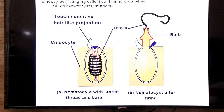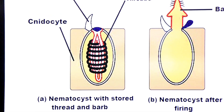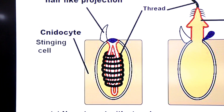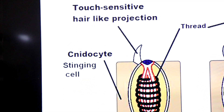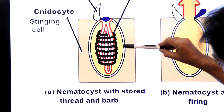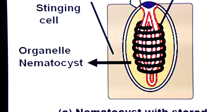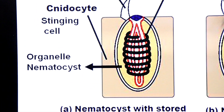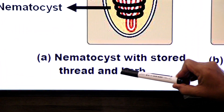Looking at the diagram, this cell is known as a cnidocyte — a specialized stinging cell used to sting prey and predators. Inside the cnidocyte there is a capsular organelle called a nematocyst. The nematocyst is made up of a stored coiled thread and a barb.